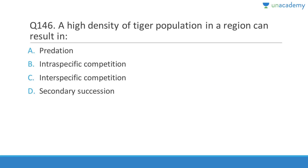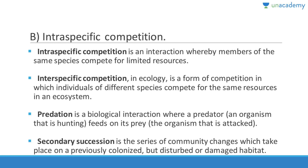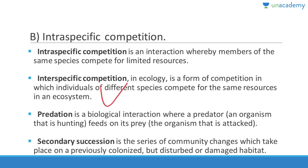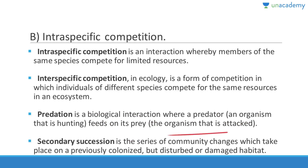A high density of tiger population in a region can result in intraspecific competition — members of the same species competing for limited resources. This is the worst form of interaction; it kills the fitness of all organisms in the species. Secondary succession is a series of community changes that take place in an already colonized but disturbed or damaged habitat — for example, after a forest fire.